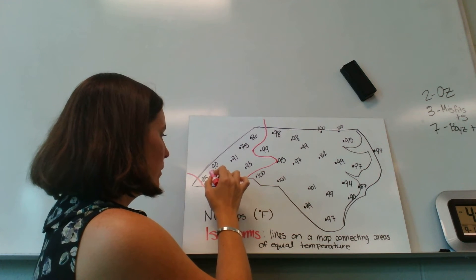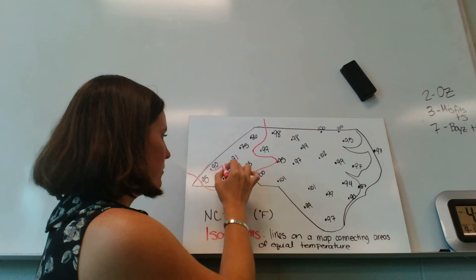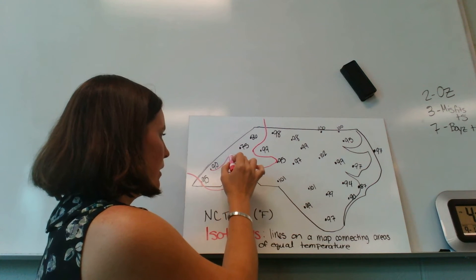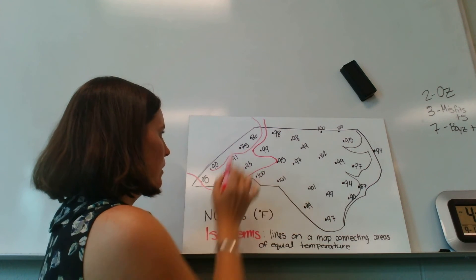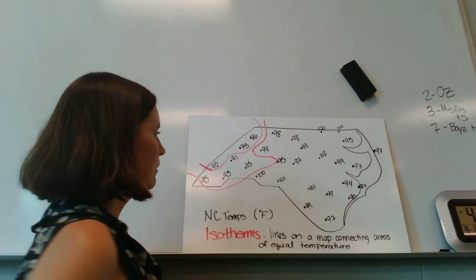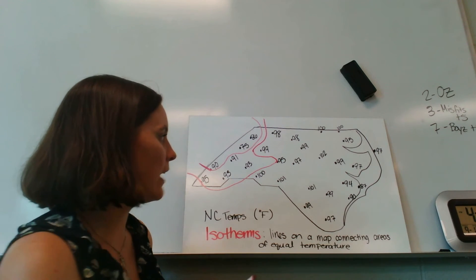So maybe I have to go up this way towards the 75, go around 91, and I can loop in those guys. So maybe my 90 degree isotherm looks like that.